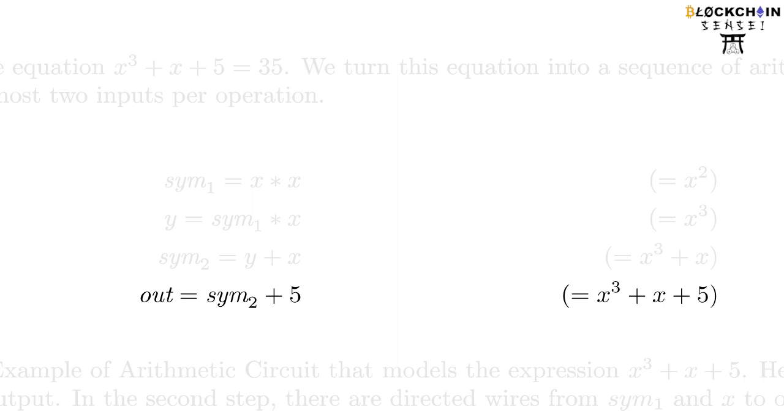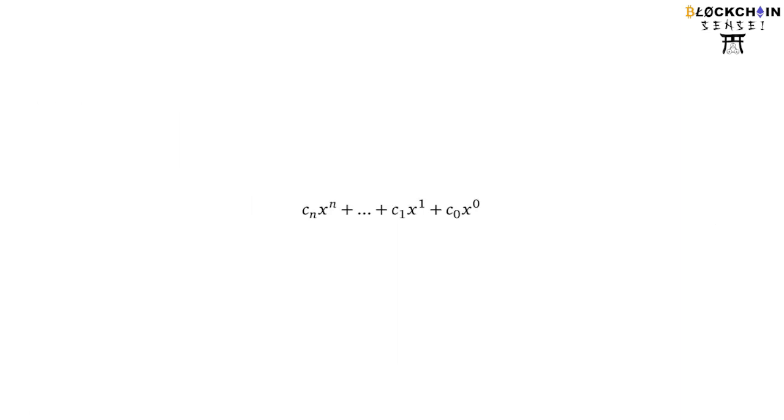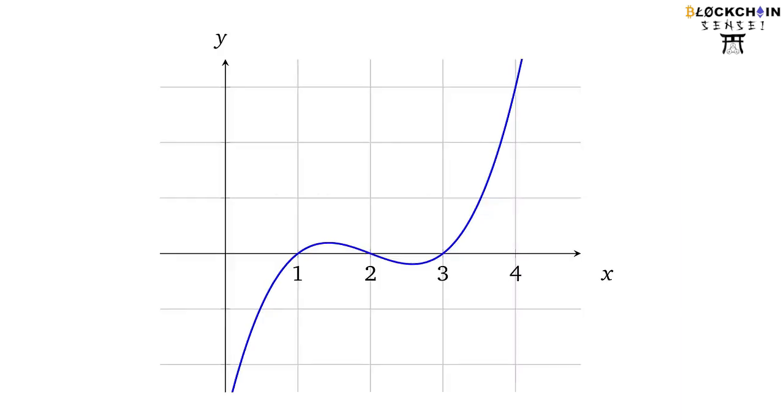So a polynomial is just an equation with variables to the nth power with coefficients and variables, and the roots are the solution of the respective polynomial. Hence, it is the solution of these polynomials that allow proof of knowledge of the polynomial itself. The prover wants to show that they know an input value, a solution of the equation, that causes the equation to equal zero.